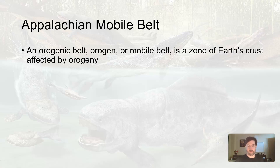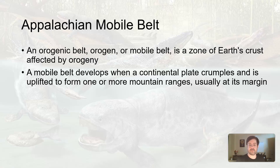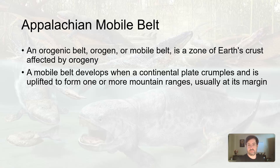When we're talking about a mobile belt, the terms are kind of synonymous. An orogenic belt and a mobile belt are all terms for a zone of Earth's crust affected by an orogeny — it's where we're making mountains, essentially. A mobile belt develops when a continental plate crumples and is uplifted to form one or more mountain ranges, usually at its margins. This is typically at convergent boundaries, when things are crashing into a continent and the edges get crumpled up to create these mobile belts.